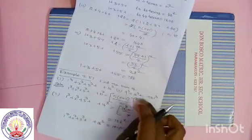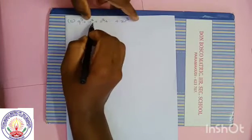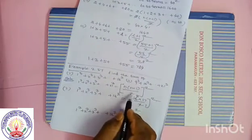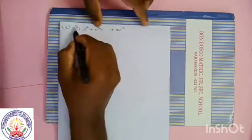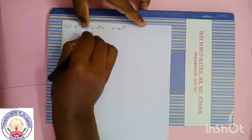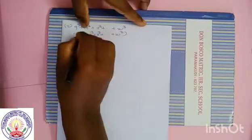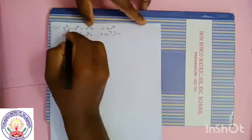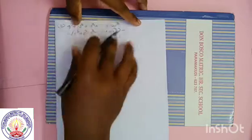Look at 9 cube plus 10 cube plus dot dot plus 21 cube. You have to be very careful — they are consecutive natural numbers but not from the beginning. If it is from the beginning we have the formula n into (n plus 1) by 2, the whole square. Now we have to be careful. We go from the beginning: 1 cube plus 2 cube plus 3 cube plus dot dot dot up to 21 cube, minus 1 cube plus 2 cube plus dot dot dot plus 8 cube.